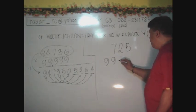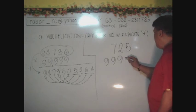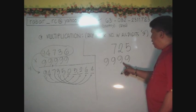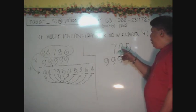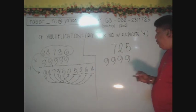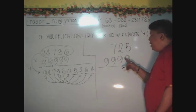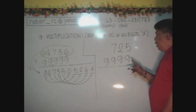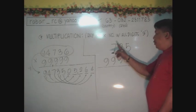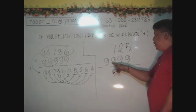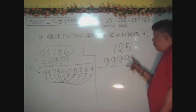We have here, let us say, 4 nines here. Meaning 9,999. To be multiplied by only 3 digit number, which is 725. As I have said, this is very much applicable if our number of digits in multiplication is the same as the number of digits here.